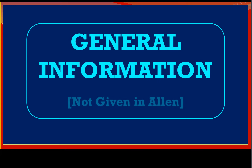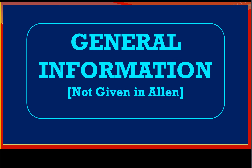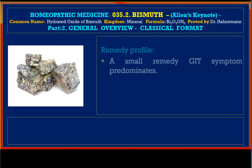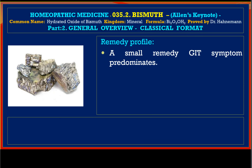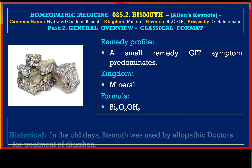Let us go to the first part, which is general information. The remedy profile: Bismuth is a small remedy having predominance of GIT symptoms. It belongs to the Mineral Kingdom and its formula is Bi2O3·OH2.